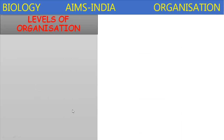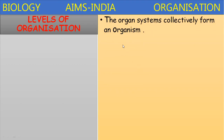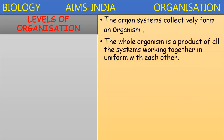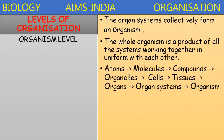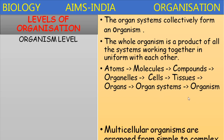The next level of organization is the organism level. The organ systems collectively form an organism. The whole organism is a product of all the systems working together in unison with each other. Atoms unite to form molecules, which unite to form compounds, which unite to form organelles, which unite to form cells, which unite to form tissues. Several tissues unite to form organs, and several organs unite to form organ systems, which finally form an organism.